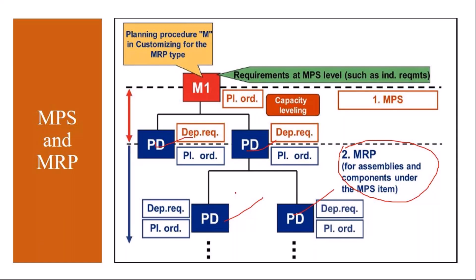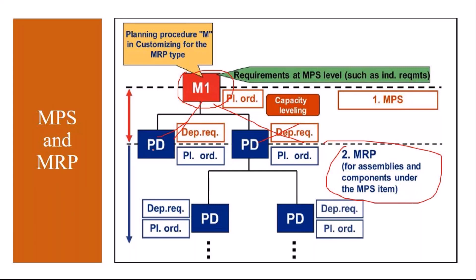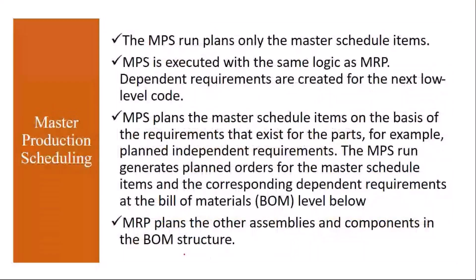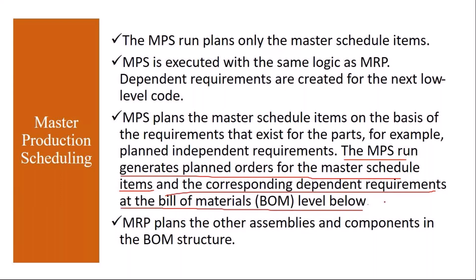The MPS run generates planned orders for the master scheduling items and the corresponding dependent requirements at the BOM level directly below — only one level. After that, MRP plans the other assemblies and components in the BOM structure. MRP takes care of the planning of the remaining materials.